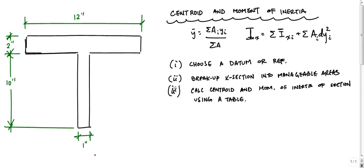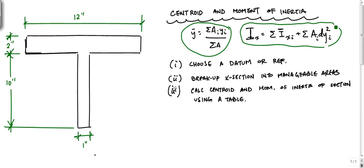We're going to tackle something that I get a lot of questions on — the centroid and especially the moment of inertia using the parallel axis theorem, which is this thing right here. Fundamentally speaking, the moment of inertia you can consider as the resistance to rotation. Combined with E times I, that's called the flexural rigidity for beams. The larger your I, the less deflection you're going to have in a beam, practically speaking.